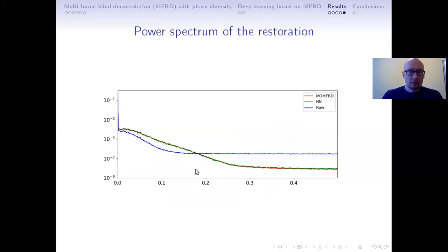And finally, I show the horizontally averaged power spectrum of the restored image. Here we see that the neural network has achieved almost the same restoration quality as the state-of-the-art method, and we see how the phase aberrations have been eliminated as well as photon noise removed.